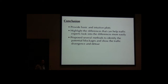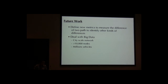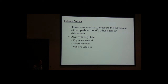We have implemented about 33 different parts in our tool that can provide basic and intuitive fast-glance views of the directed data. We can highlight the differences that help traffic experts look into interesting areas more easily, and we propose several methods to identify potential blockages and show traffic divergences. In the future, we want to define new metrics to measure the difference between two paths, identify more kinds of changes, and deal with the scale of data, since some of our methods are pretty slow and we need to think about how they can work on larger datasets.